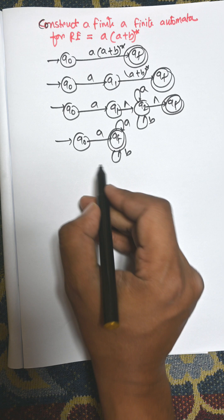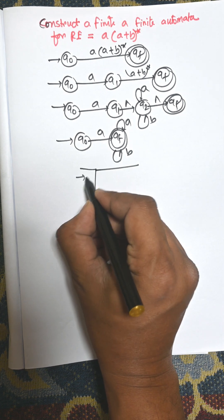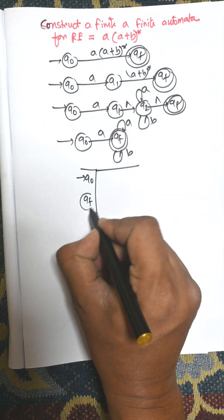Now we need to draw the transition table. There is Q0 and Qf. Qf is the final state.